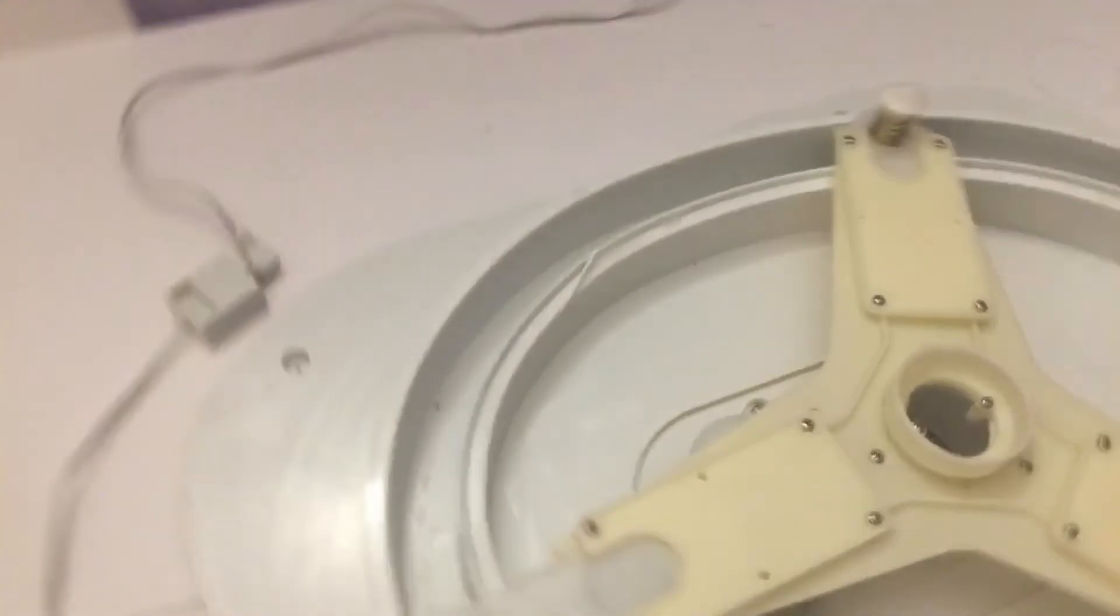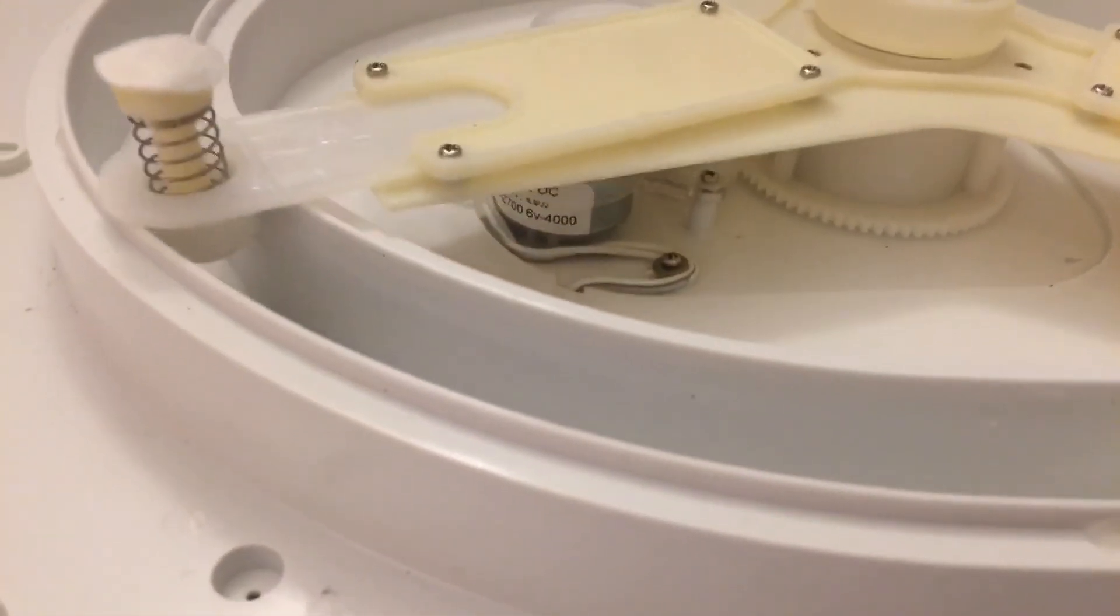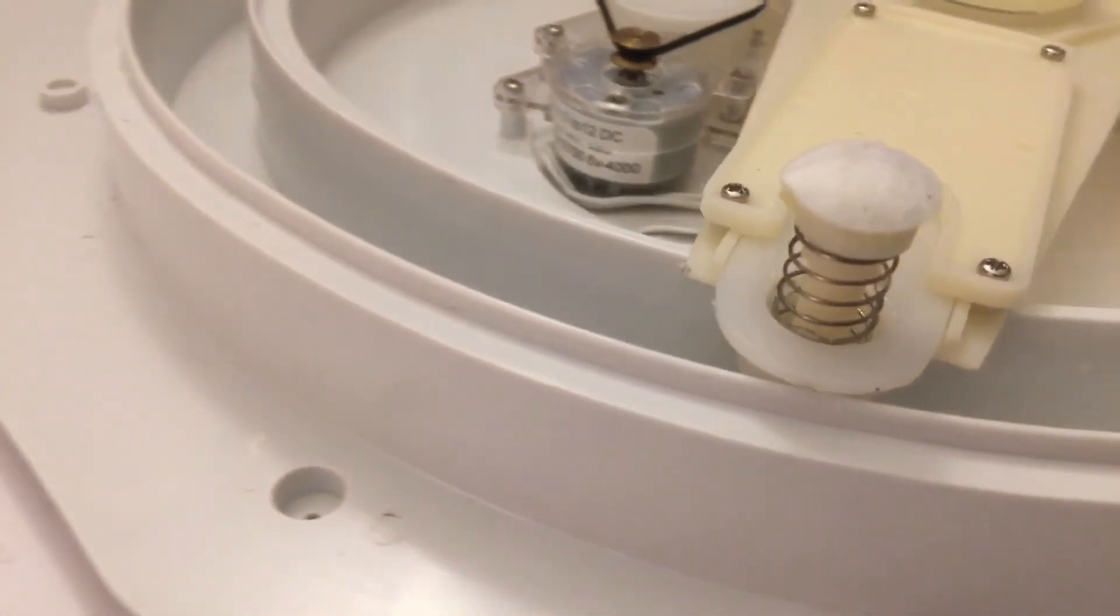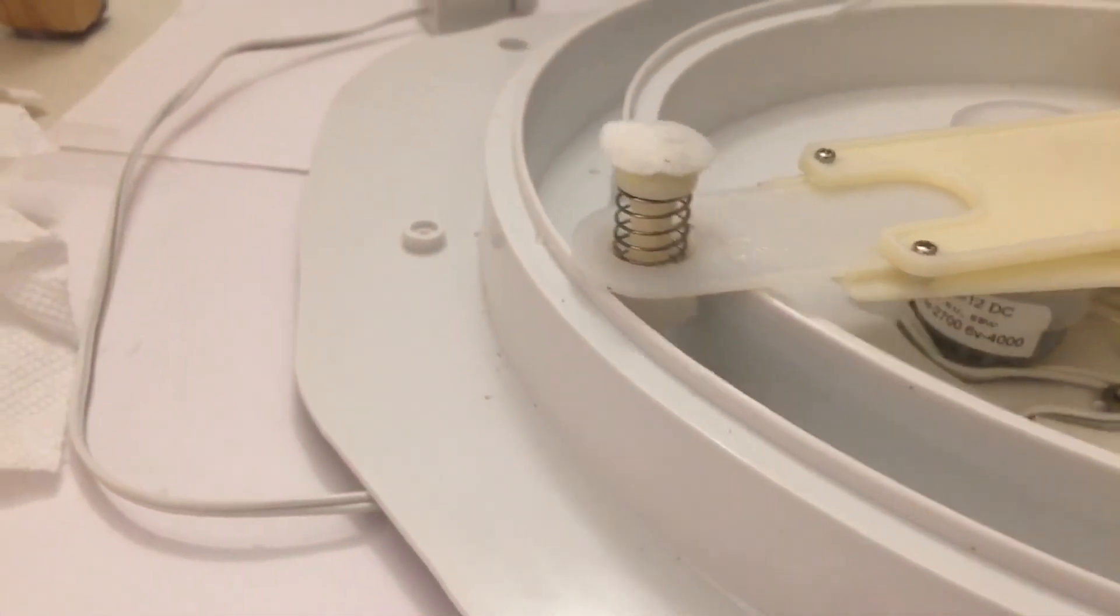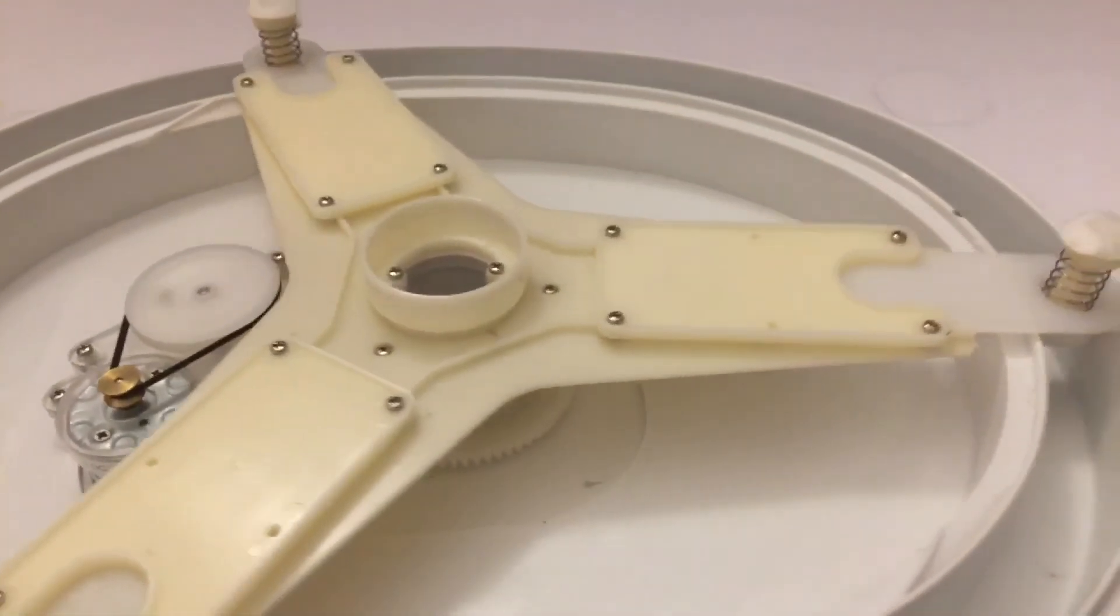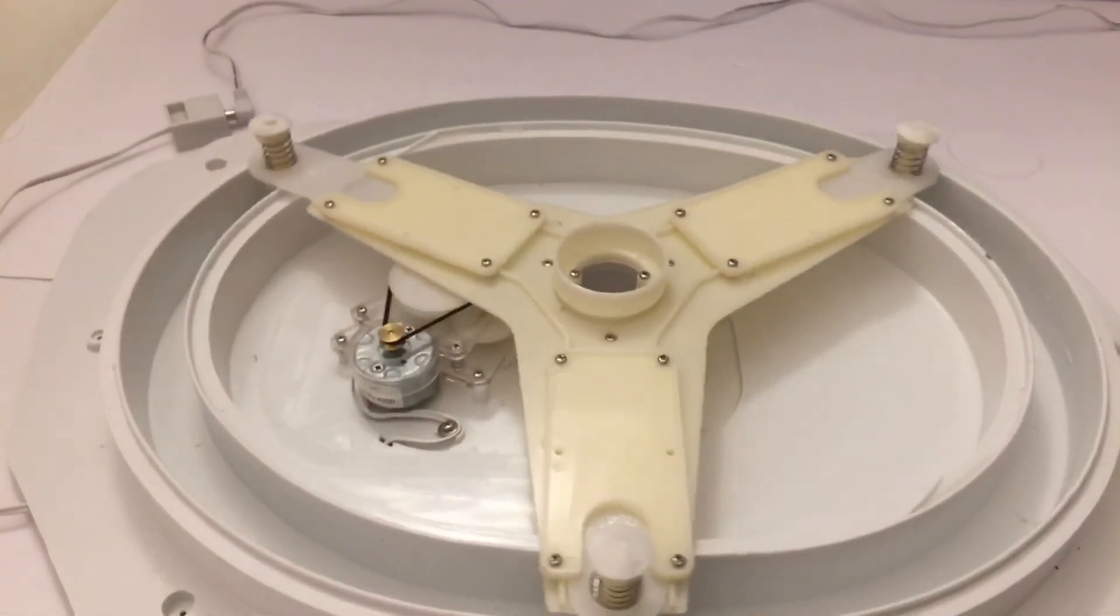As you can see, the little slides slide back and forth as it goes around the unit. We have reinstalled the motor, the belt, and lubricated the gears. We are ready to put the top plate back on the unit.